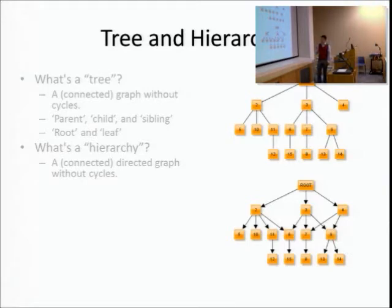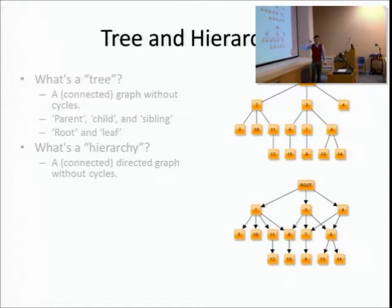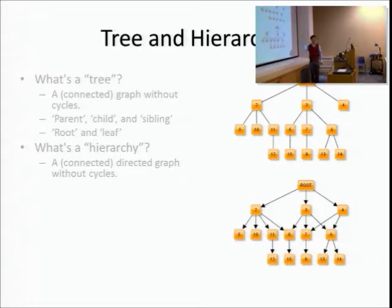To make things a bit more complicated: if you remove the directions on the edges, you can see that root, 3, 7, and 4 form a cycle. Once a graph has a cycle - directed or undirected - it becomes a more general graph and is neither a tree nor a hierarchy.